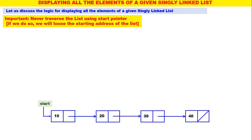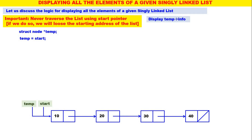Therefore, always you have to traverse the linked list using a temporary pointer. We will declare a temporary pointer: temp is equal to start. Yes, we have a temporary pointer for this list. Now temp is containing the address of the first node.